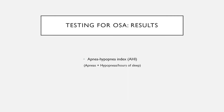We sum up all of the apneas and hypopneas that you have over your hours of sleep and create a thing called the apnea hypopnea index, or AHI. This is the number we use to determine the severity of your sleep apnea. We'll talk more about that in the next slide.